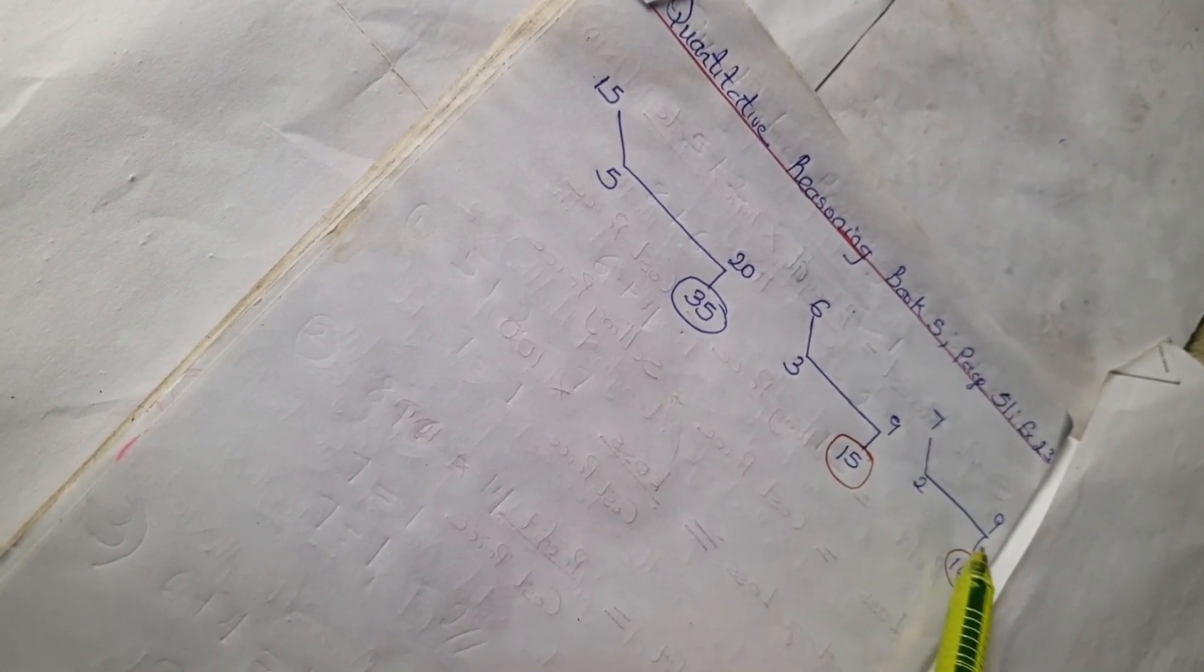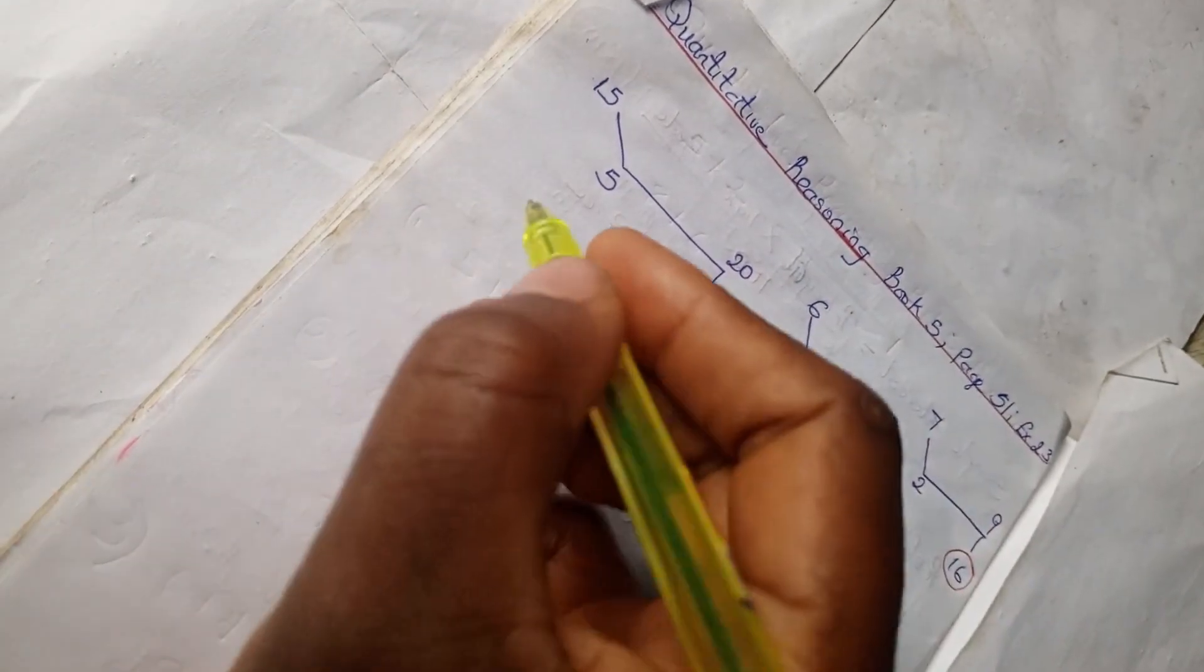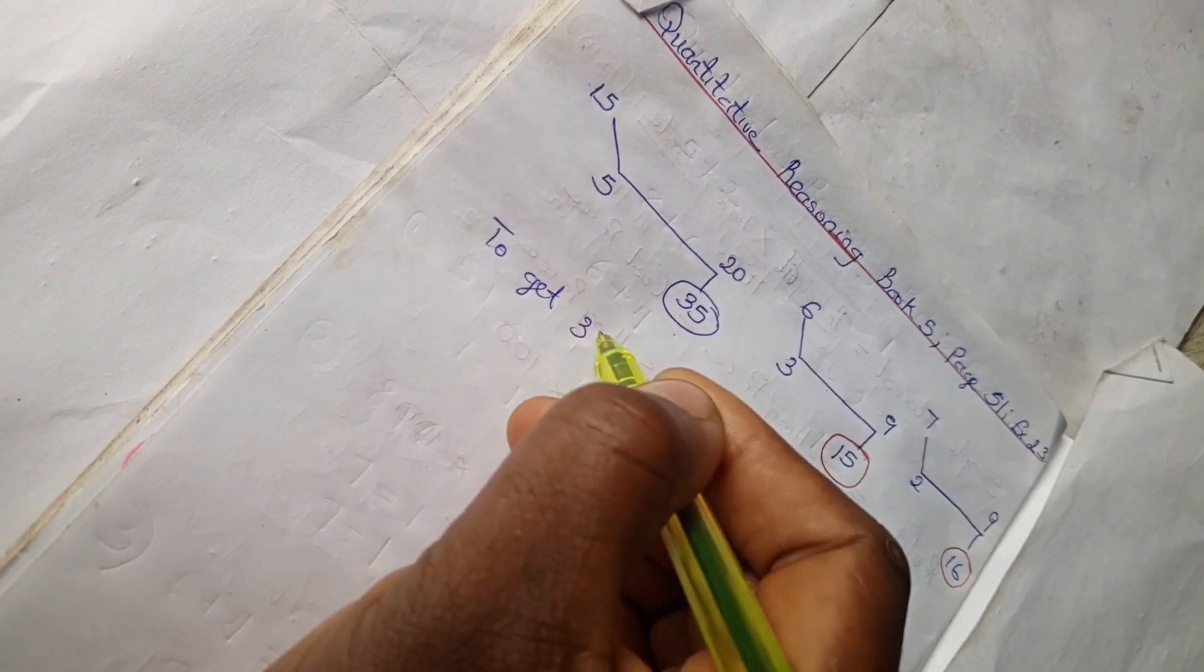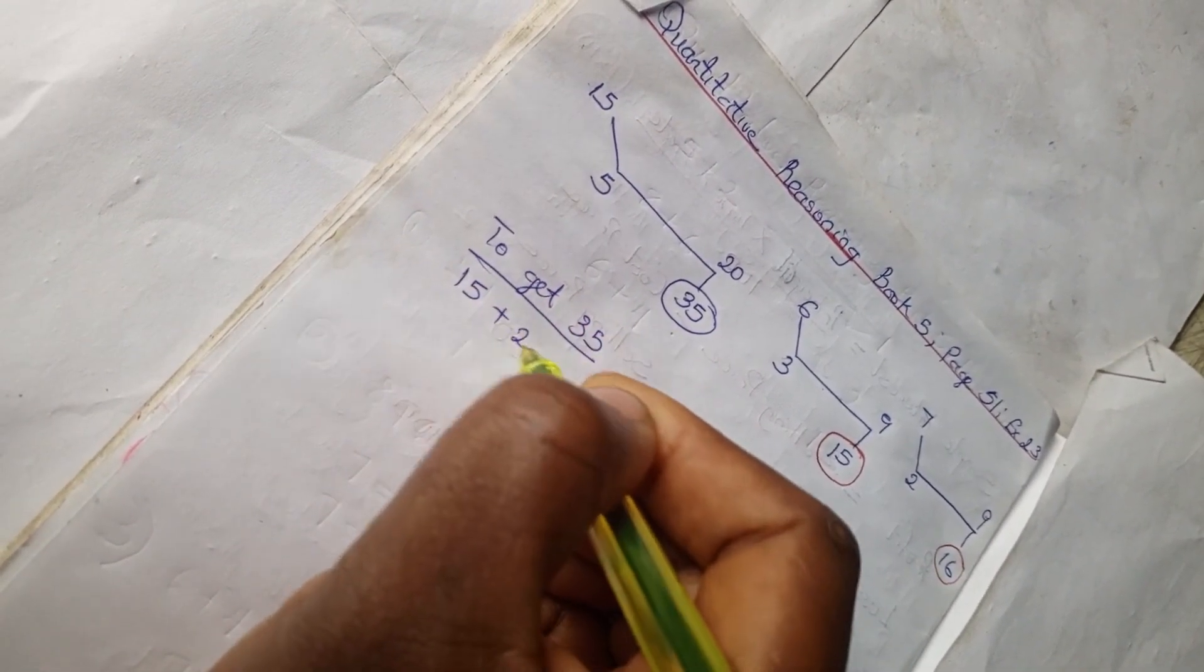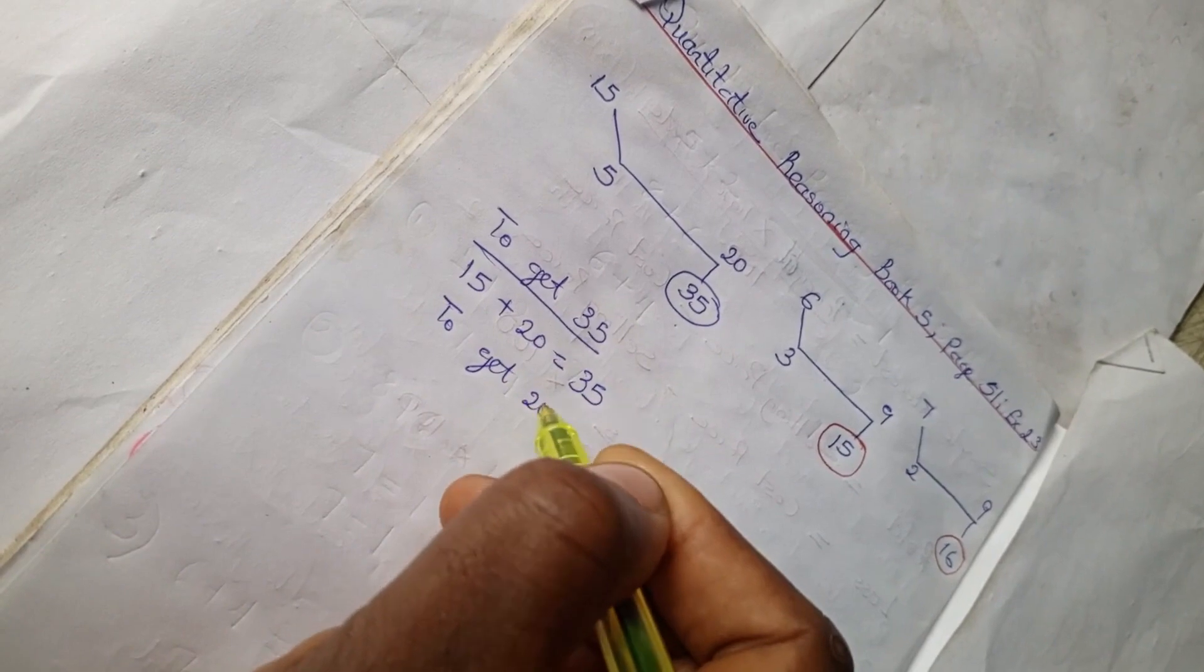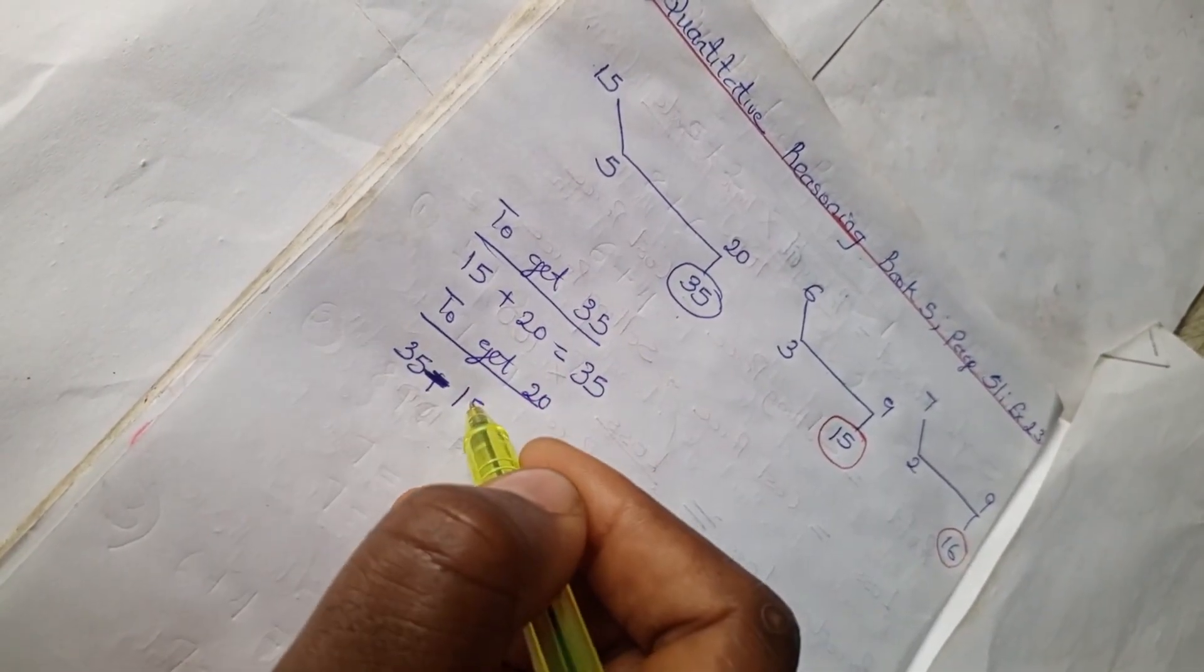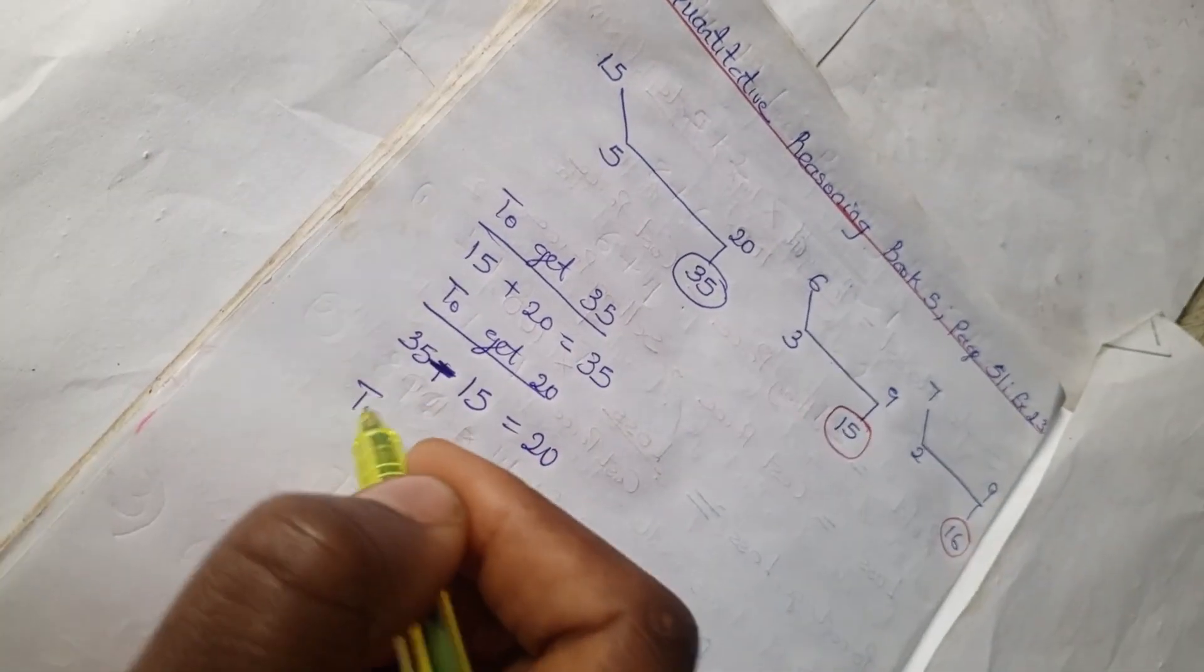So let's work with example 1. To get 35, we have 15 plus 20 is 35. To get 20, we have 35 minus 15 is 20. And to get 15, we have 35 minus 20 is 15.